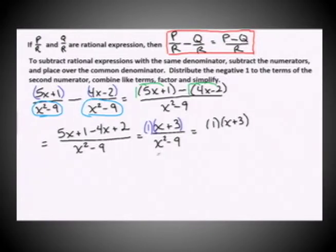We have 1 times x plus 3 in our numerator. Looking at our denominator, this is a difference of squares. It fits in that mold of something squared minus something squared. That denominator factors as x plus 3 times x minus 3.